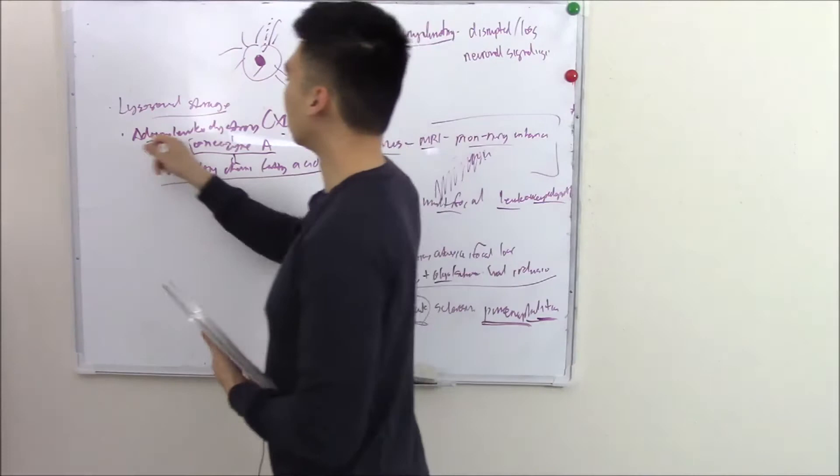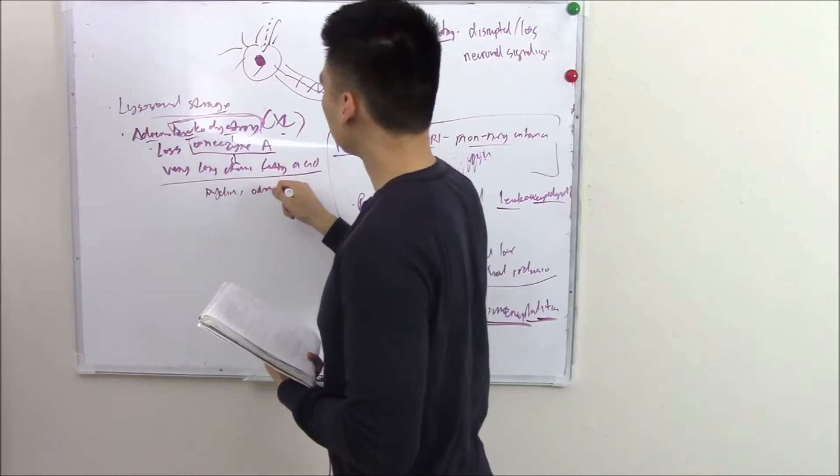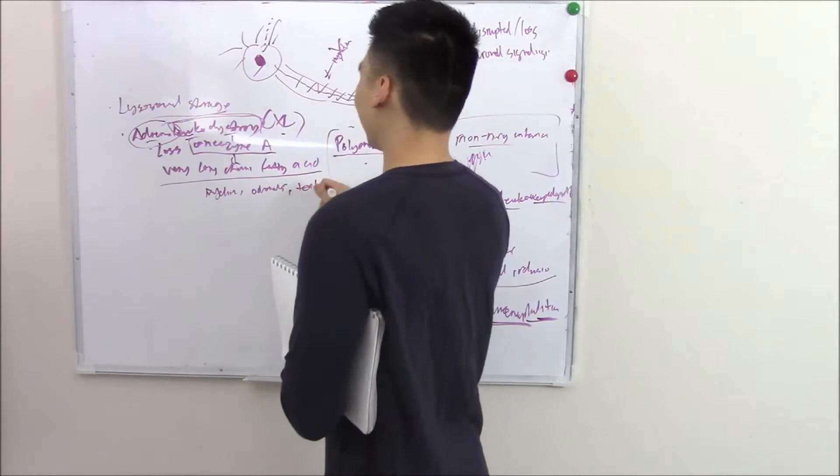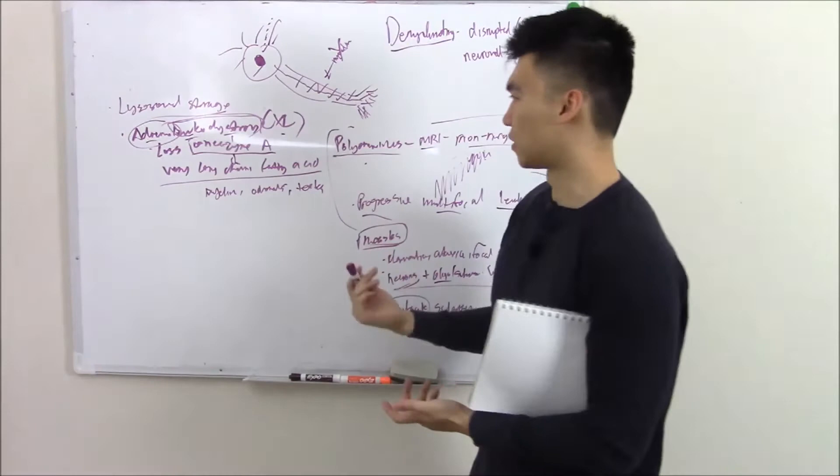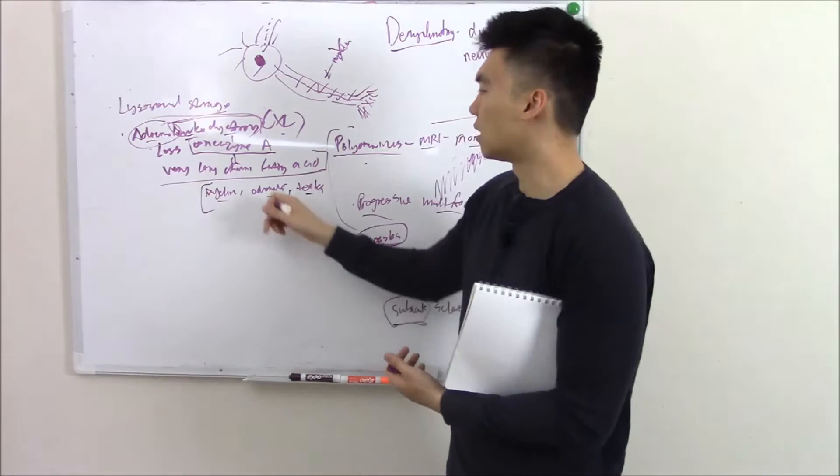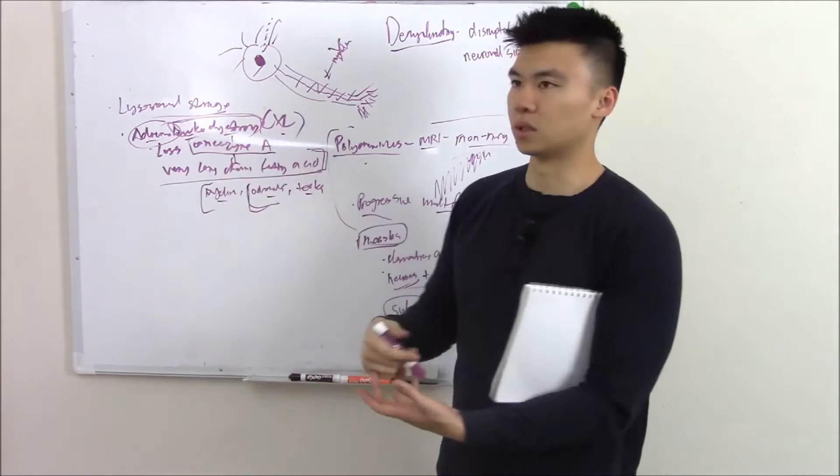Why do they call it adrenal leukodystrophy? Because it likes to affect your myelin—that's the leukodystrophy part. But it also likes to affect your adrenals, causing adrenal insufficiency with low cortisol, low aldosterone. It also affects your testes. Questions I've seen on this almost always mention very long chain fatty acids building up in the cells, and then they might ask what's the inheritance pattern—X-linked.